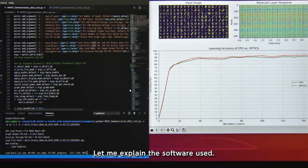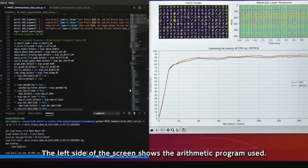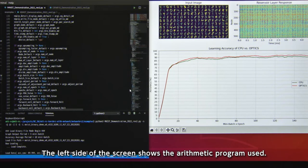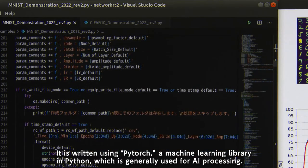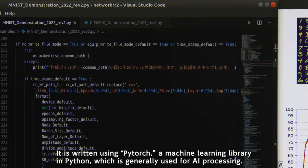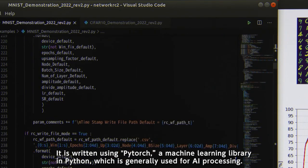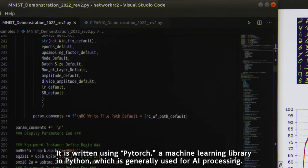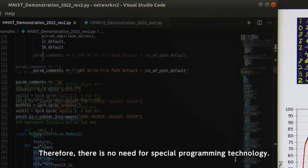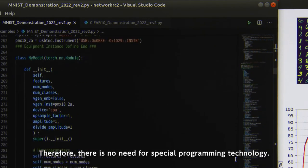Let me explain the software used. The left side of the screen shows the arithmetic program used. It is written using PyTorch, a machine learning library in Python, which is generally used for AI processing. Therefore, there is no need for special programming technology.